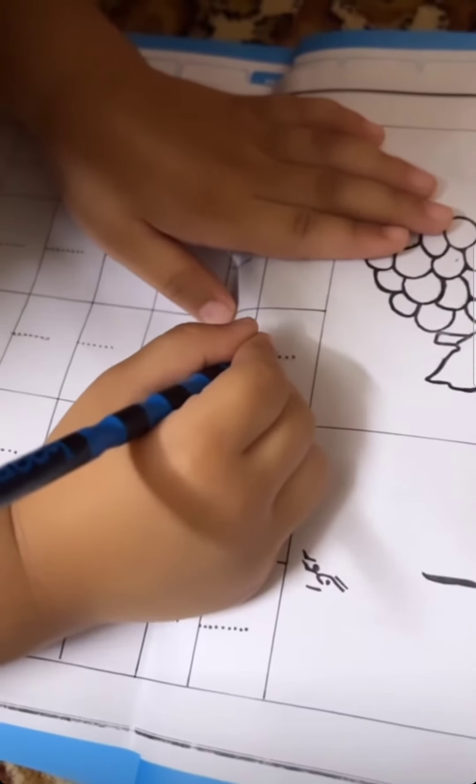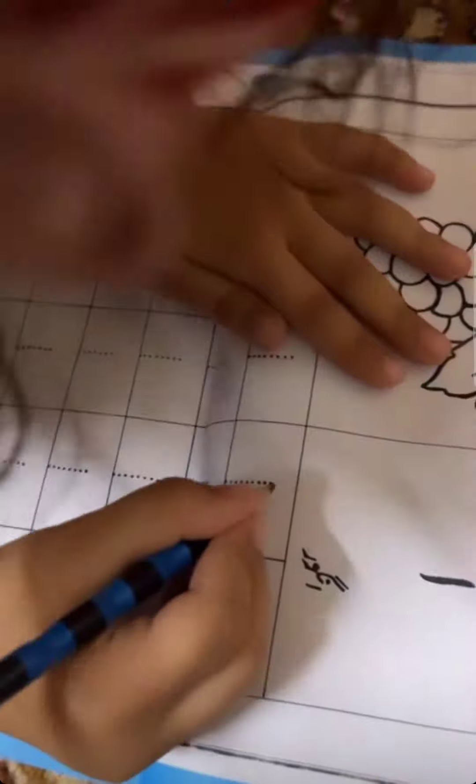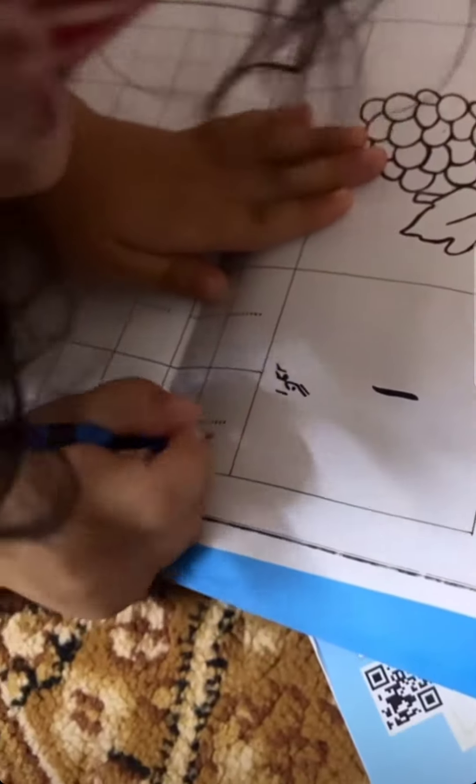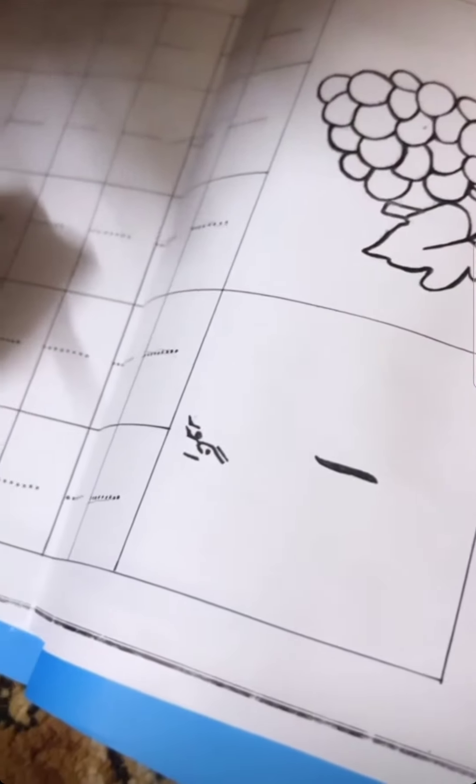Good, very good. It's easy, yes, this work is easy. Very good, next one. What is made from alif? Alif, anggur (grapes). Very good.